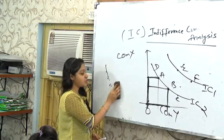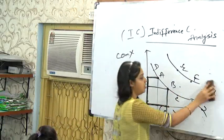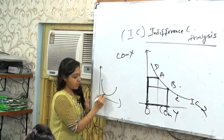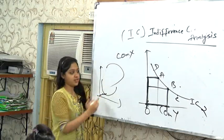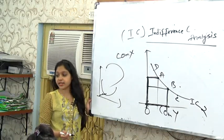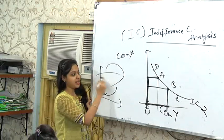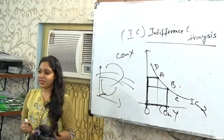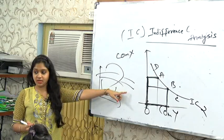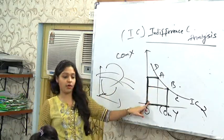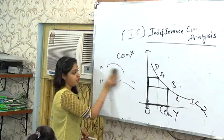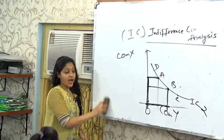Point number three: indifference curve is convex to the origin — it bulges towards the origin. Convex means bulging towards the origin; the opposite shape would be concave. Why is it convex? This convexity is because of a law that operates here: the law of diminishing marginal rate of substitution of X for Y. This law states: as we go on consuming more and more of Y, we need to forego lesser and lesser of X to maintain the same level of satisfaction.